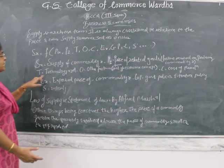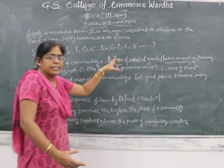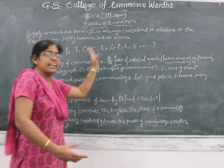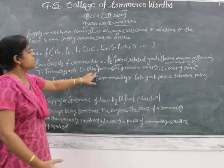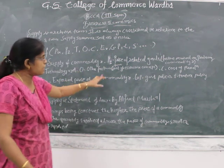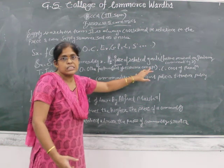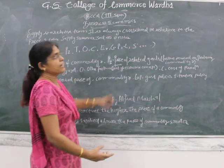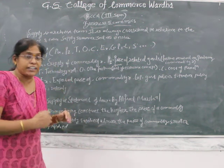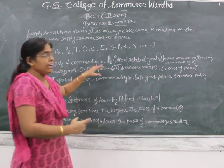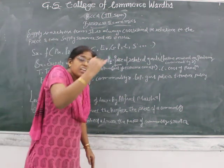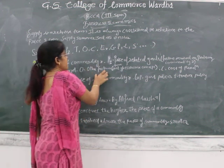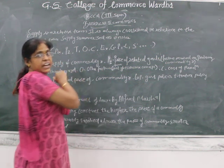T stands for technology used in producing the commodity — the kind of technology used determines how prices or rates are fixed. O stands for other factors, which are outside the economic concept, such as geographical conditions and weather conditions that affect supply.